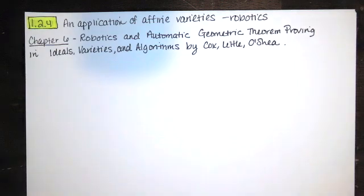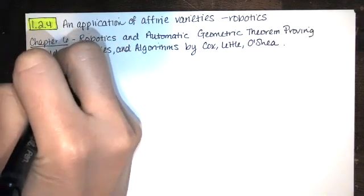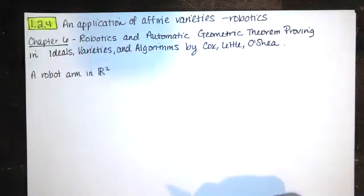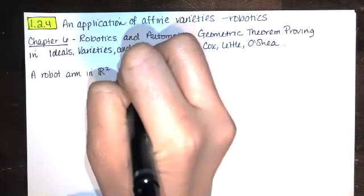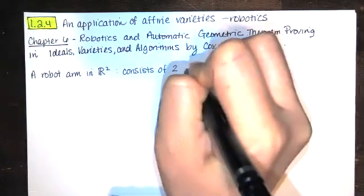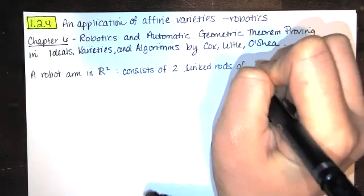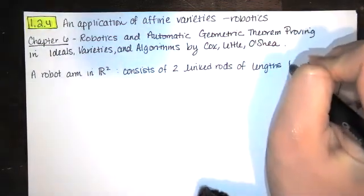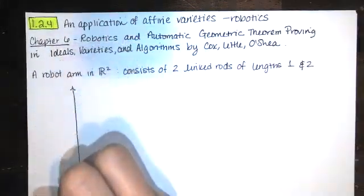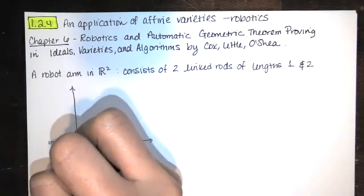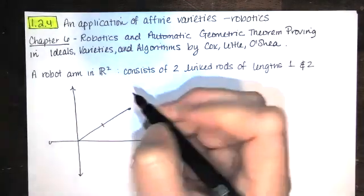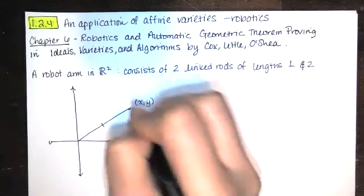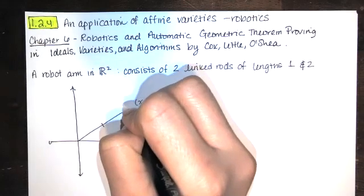As a simple example, let's say you have a robot arm in the plane, so we're just in two-dimensional space and it consists of two linked rods of lengths one and two. Let's say the first robot arm has a length of two.